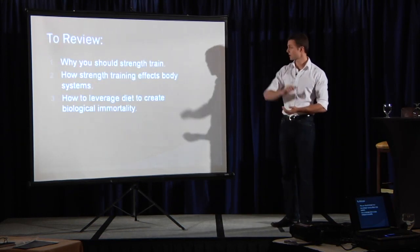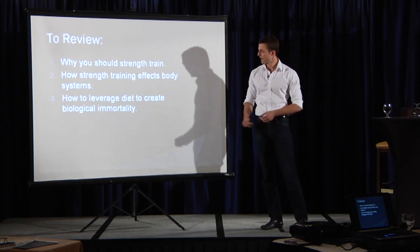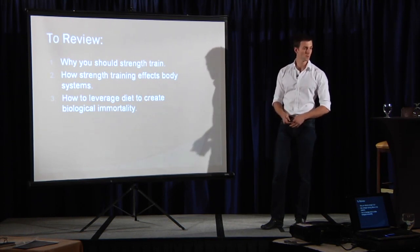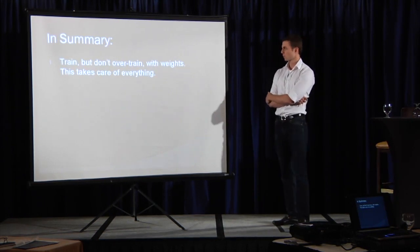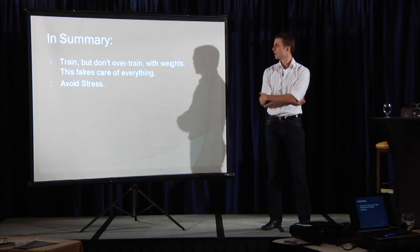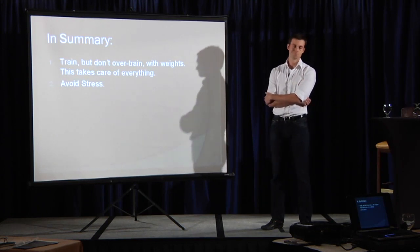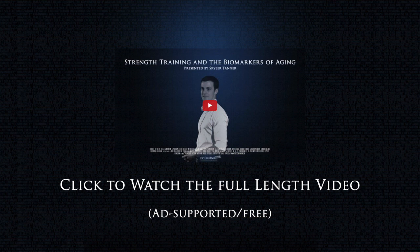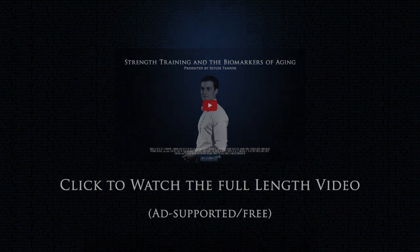So to review, I told you why you should strength train, how it affects your body systems and how to leverage your diet to create this biological immortality. They all fit together. To simplify that entire presentation, three points: Train, but do not overtrain with weights, and this takes care of everything. You avoid your stress, everything will figure itself out over time. And you eat the way Mark Sisson told you to, or close to it, pretty much. That's all, guys.